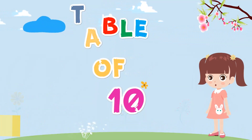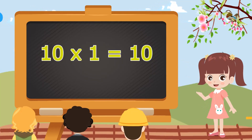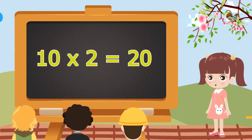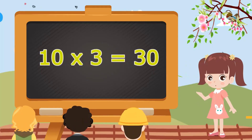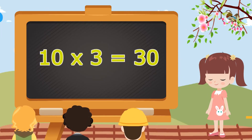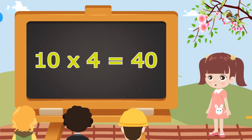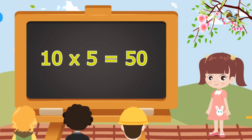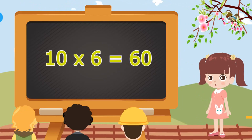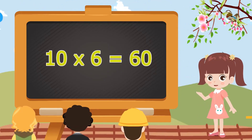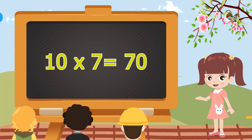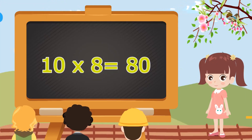Table of Ten. Ten ones are ten. Ten twos are twenty. Ten threes are thirty. Ten fours are forty. Ten fives are fifty. Ten sixes are sixty. Ten sevens are seventy. Ten eights are eighty.